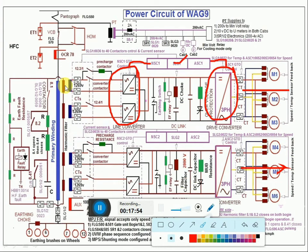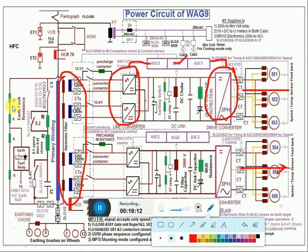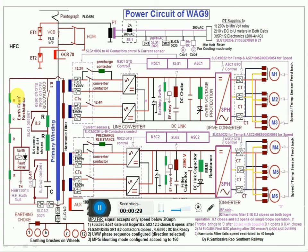For any harmonics in the traction power winding, they will be suppressed by the harmonic filter. The harmonic filter is a combination of one inductor, one resistance, and one capacitor. The resistance is provided on the loco roof, cooled by atmospheric air.